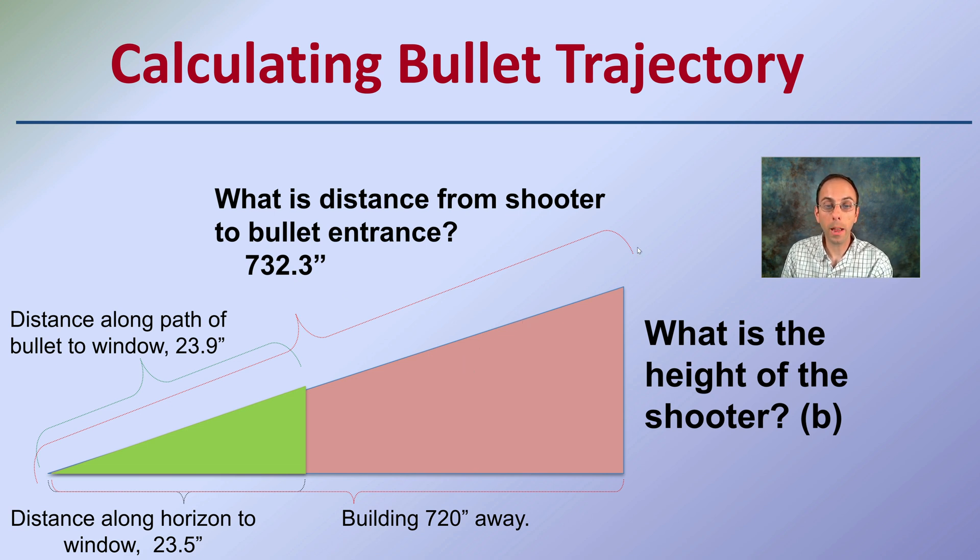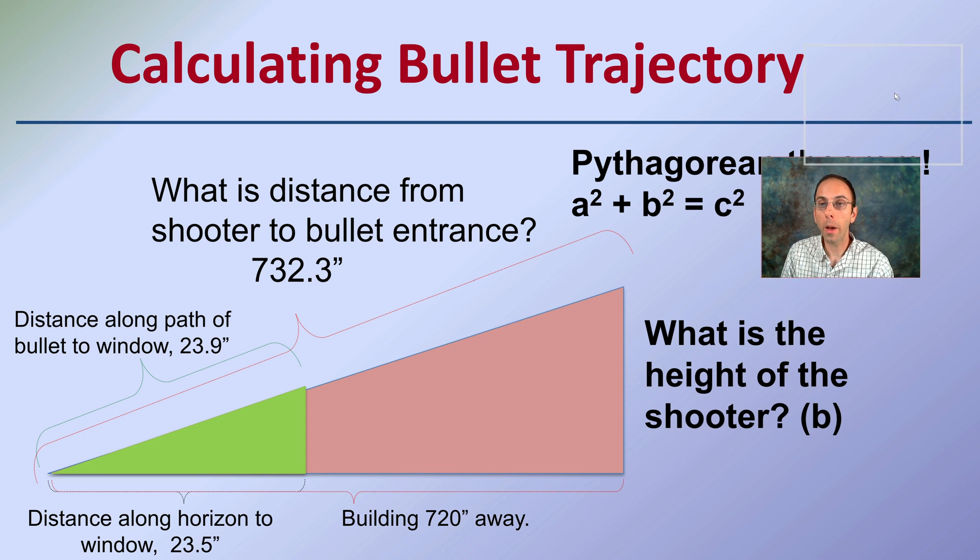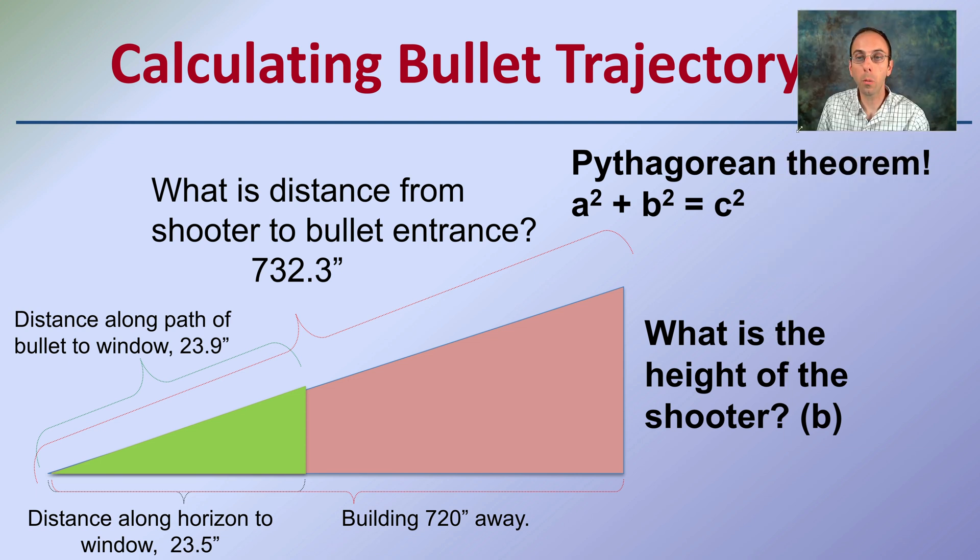So now we have this distance. We want to figure out what the height of the shooter is. We're looking for this side of this larger triangle. And we're going to go back to, we may remember way back when, when you used the Pythagorean theorem: a squared plus b squared equals c squared to determine this because this is a right triangle.